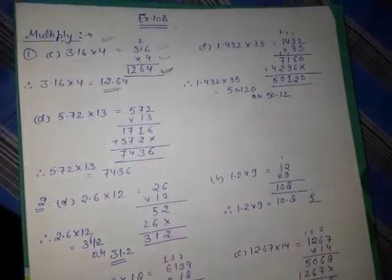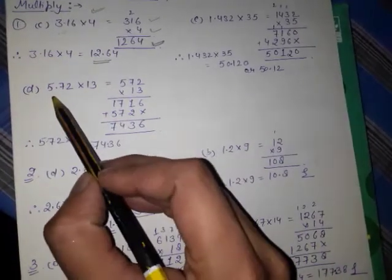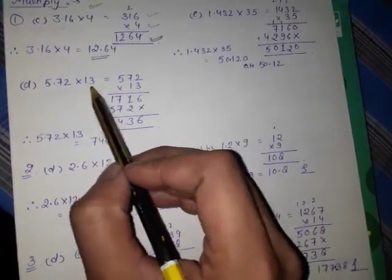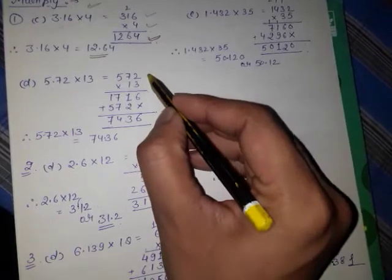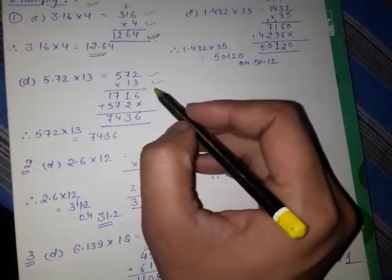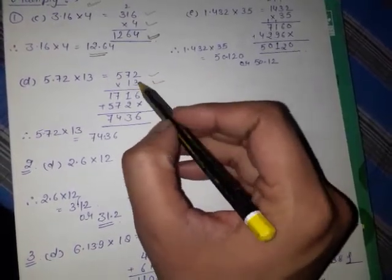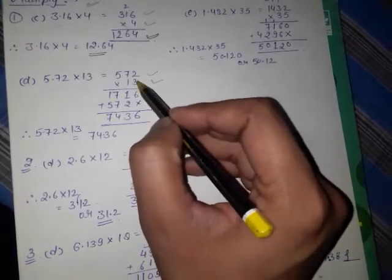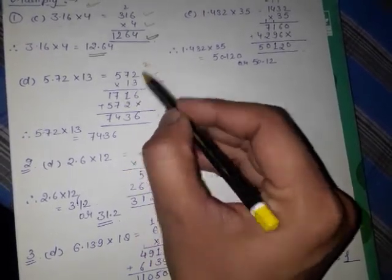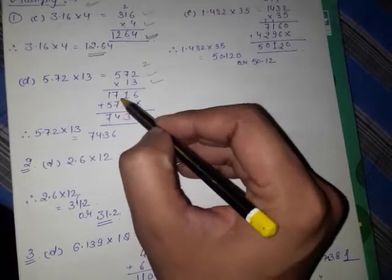D part का question है students, उसमें ध्यान से देखिए। 5.72 multiplied by 13, तो पहले 572 multiplied by 13 करेंगे। 3 times 2 is 6, 3 times 7 is 21, carry 2, 3 times 5 is 15 plus 2 is 17।